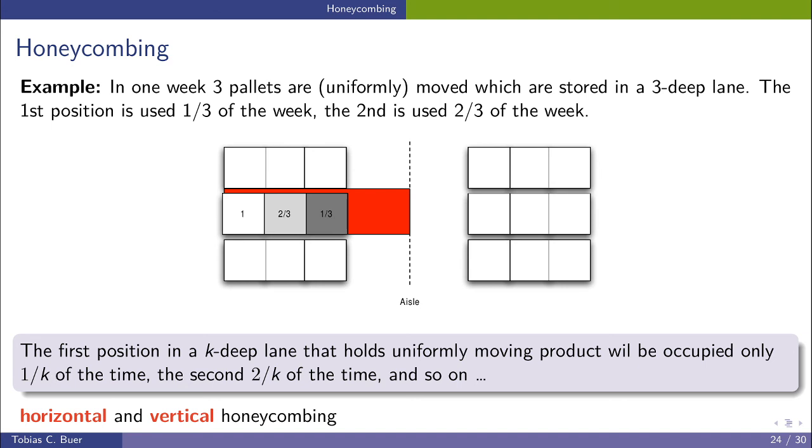So that means if the lane is K units deep, then the first position is only occupied for one-kth of the time, the second for 2 over K, and the third for 3 over K, and so on.